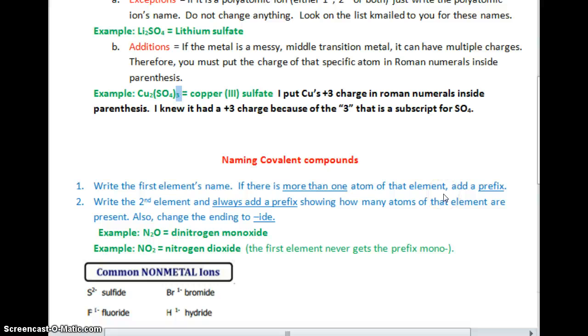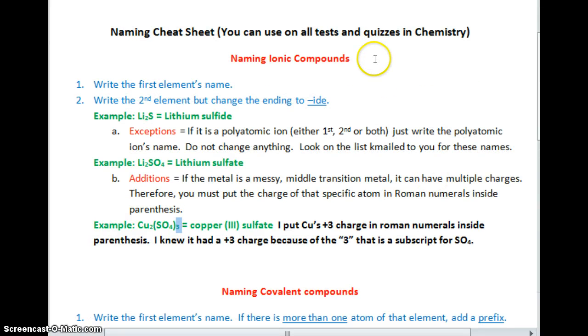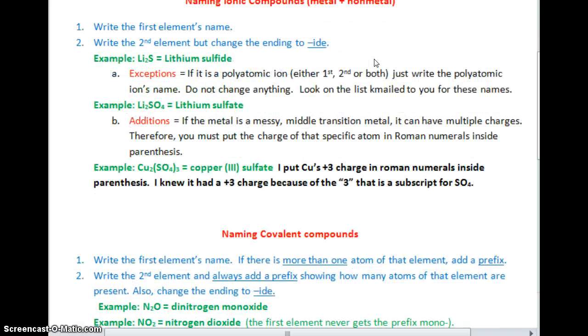Now we're going to go on to naming covalent compounds. Remember, ionic compounds are made of a metal plus a non-metal. Covalent compounds are just made of non-metals. Write the element's first name per covalent compound. If there is more than one atom of that element, add a prefix. Prefixes come before the word. Write the second element and always write a prefix showing how many atoms of that element are present. Also, change the ending to -ide.